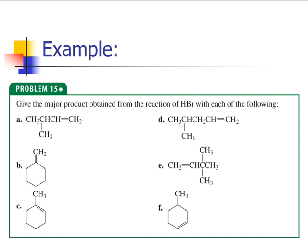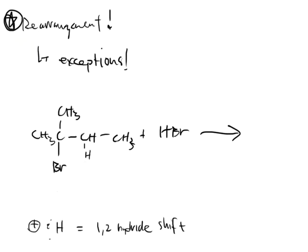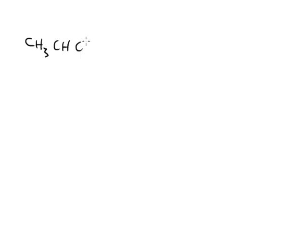Practice makes perfect. We're starting with problem number 15, which says give the major product from the reaction of HBr with each of the following. They're limiting the reagent to just HBr, so H goes on one side and Br goes on the other. This follows our discussion of carbocation rearrangement, so they want us to revisit these reactions and double-check that carbocation rearrangement doesn't happen before slapping products down.